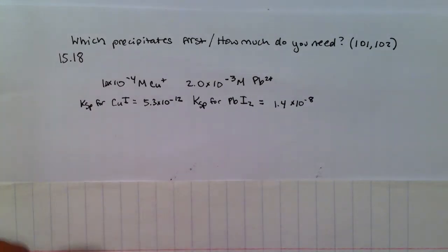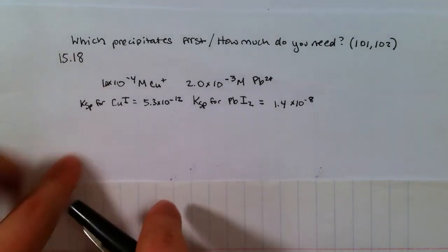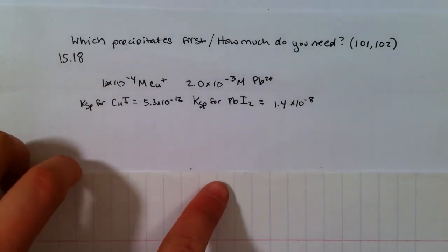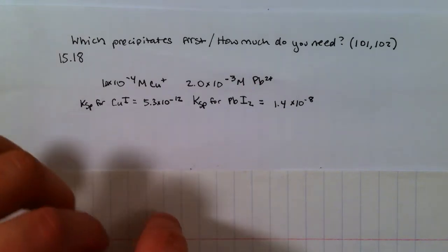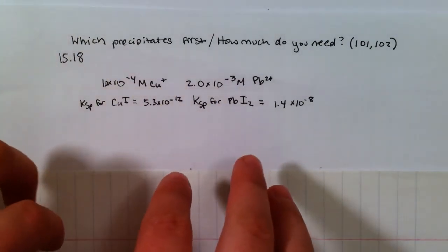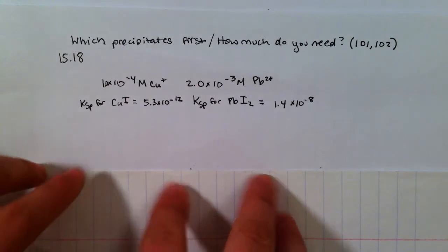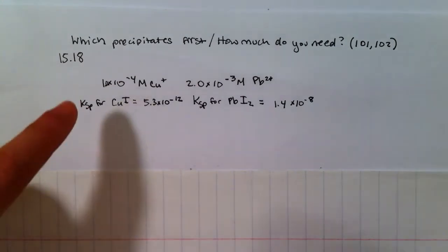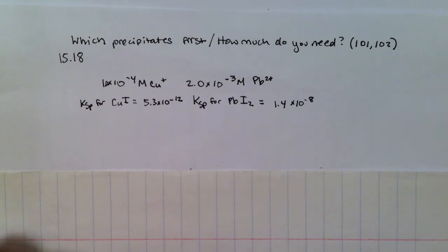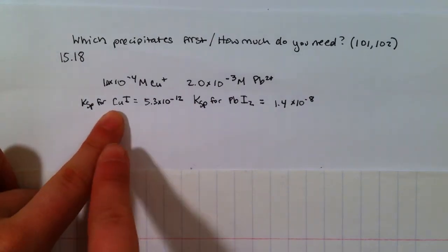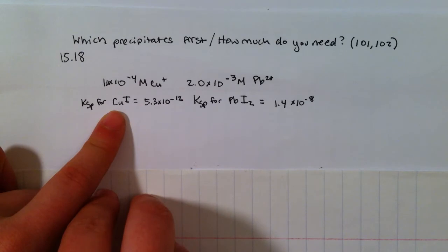The first thing you need to recognize is that this is different than the problems we were doing because we are going to have different amounts of the anion and the cation. We're adding I- gradually and we have Cu already in there. The other problems we were doing would be like if we had CuI and put it in a beaker and it broke apart into Cu and I. So those are a different type of problem than these ones.